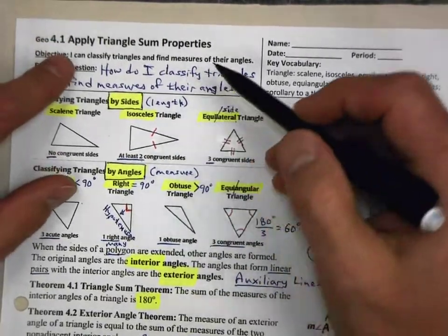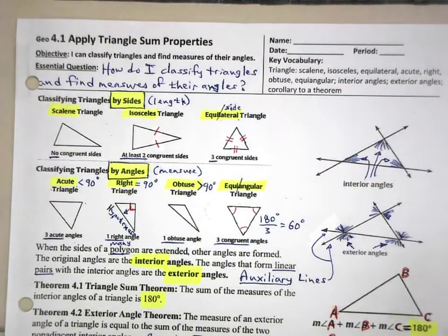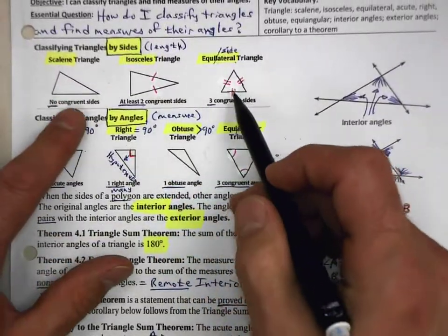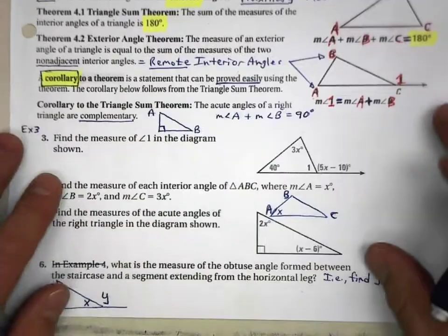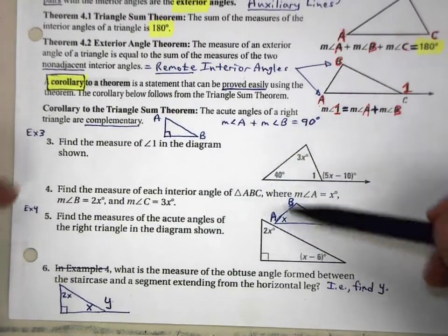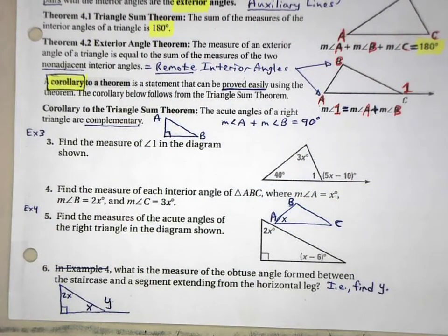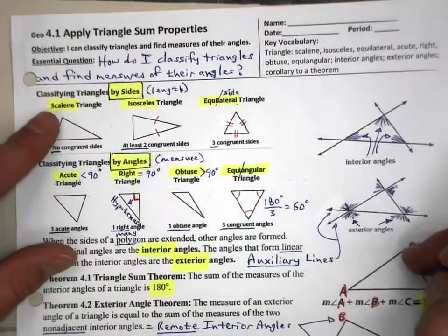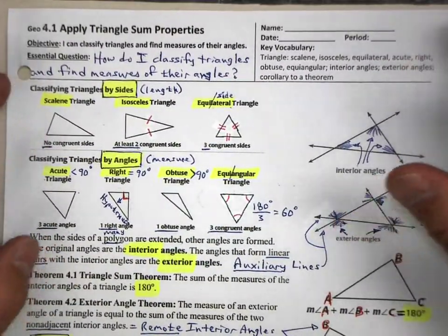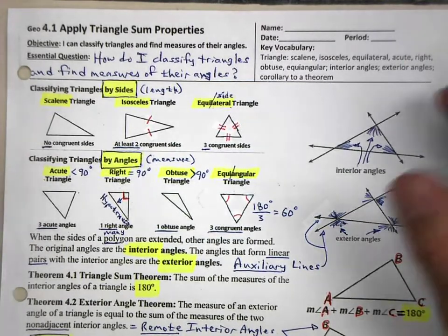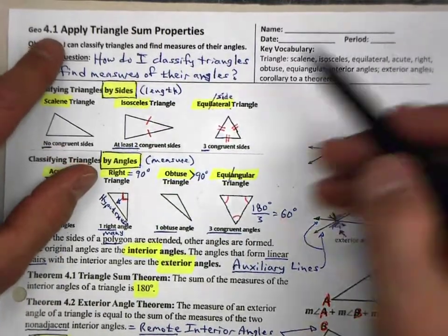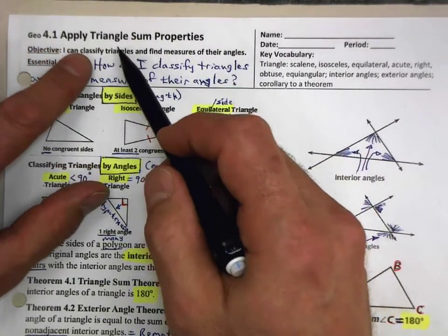4.1, apply triangle sum properties. I've been told that I go too slow, so I am going to zoom through this. There's a lot of information, and a lot of this stuff you know already. Make sure you pay attention because you do have some problems that you need to be able to do on your own. I am not going to give you full credit for this homework assignment if you simply copy down what I have here. Please make sure you are using your brain and not just copying. We're looking at chapter 4, section 1: apply triangle sum properties.